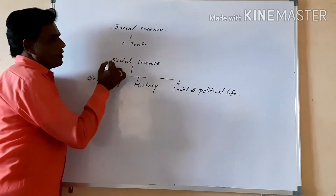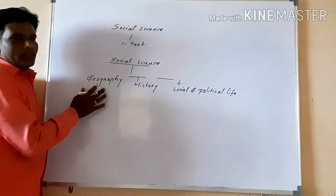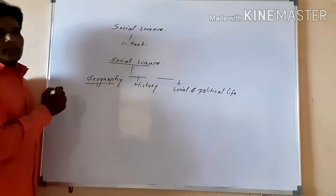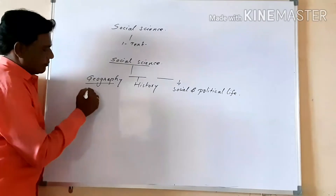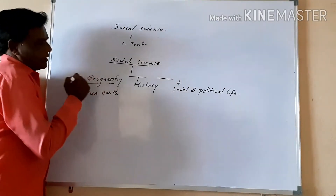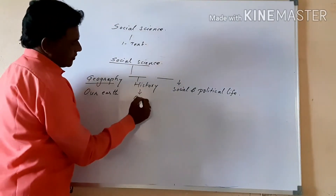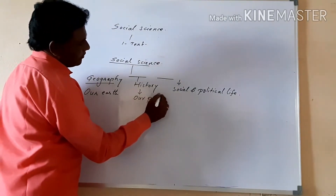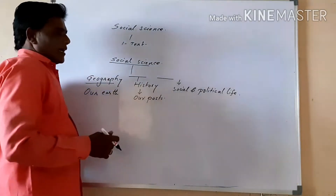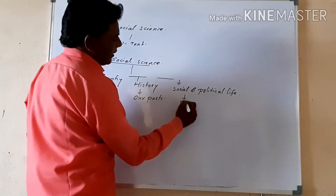Up to 5th standard we had only one textbook, but now we have 3 types of books. The first book is called Geography, also called 'Our Earth.' The second book is History, also called 'Our Past.' The third one is Social and Political Life.